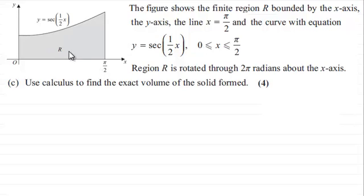Now we're told that this region R is rotated through 2π radians about the x-axis, and we've now got to use calculus to find the exact volume of the solid formed for four marks.